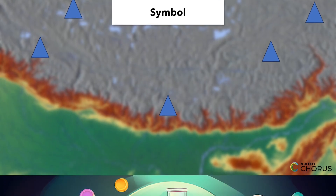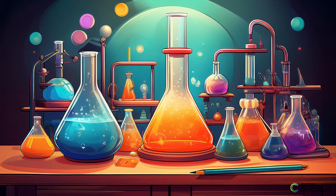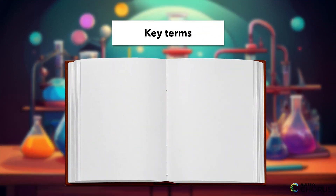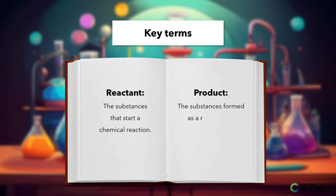Now let's look at a medium-level example: interpreting terms in a basic chemistry experiment. You might encounter the term reactant, which refers to the substances that start a chemical reaction. Another term, product, refers to the substances formed as a result of the reaction. Understanding these terms is crucial for following experimental procedures and predicting outcomes.